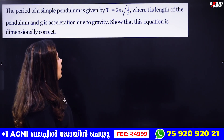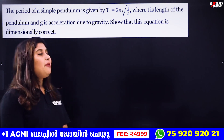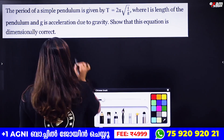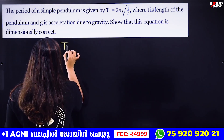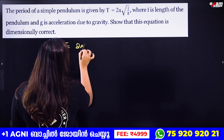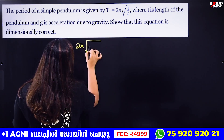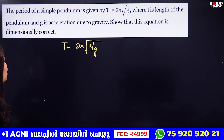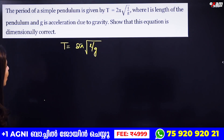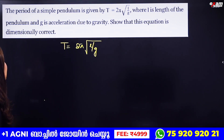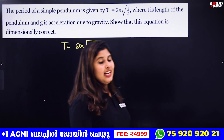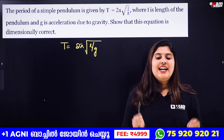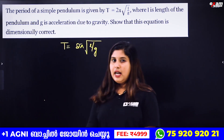The next question: the period of a simple pendulum is given by T = 2π√(l/g), where l is the length of the pendulum and g is the acceleration due to gravity. Show that this equation is dimensionally correct.